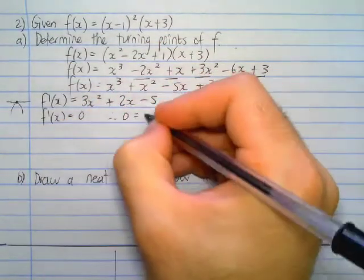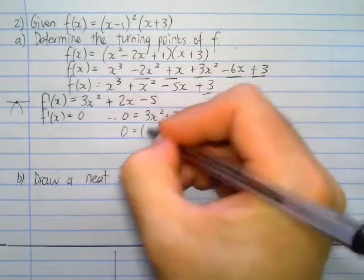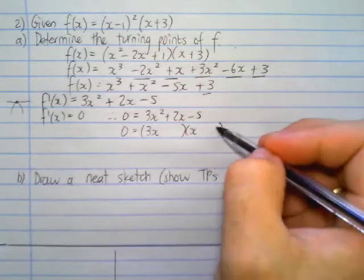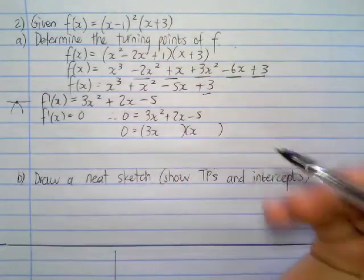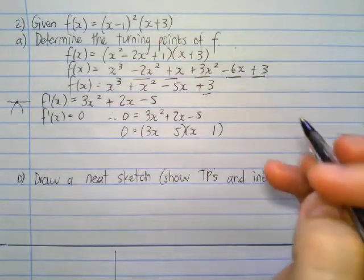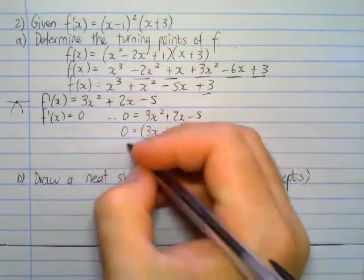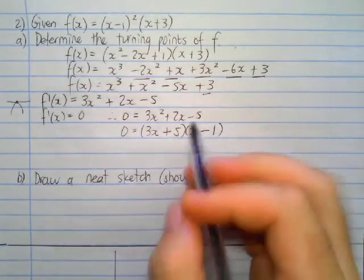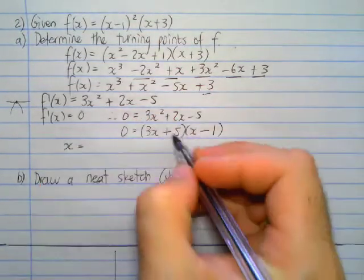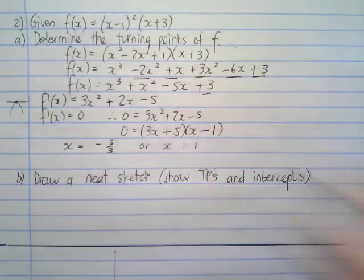The gradient of the tangent at that point is totally flat, meaning the gradient is 0. So we make the first derivative equal to 0. So 0 equals 3x² + 2x - 5. We can factorize that into 3x and an x. We need to put the 5 in somehow. So the two coordinates, the x coordinates for the turning points would be x equals -5/3 or x equals 1.